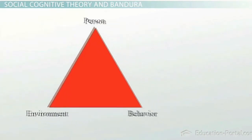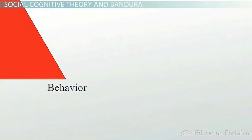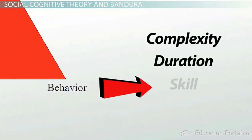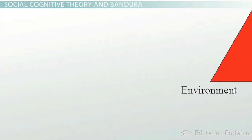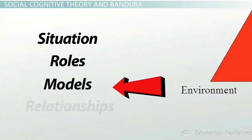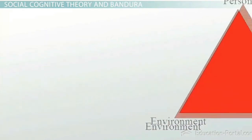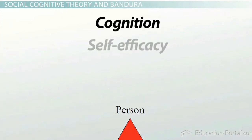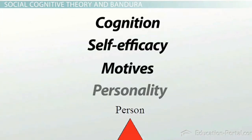In the model, B or behavior refers to things like complexity, duration, skill, etc. The E stands for environment, and it's comprised of the situation, roles, models, and relationships. P, or person, is comprised mainly of cognition, but also other personal factors such as self-efficacy, motives, and personality.